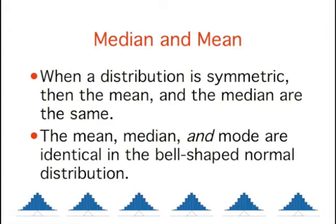There are two important final points to note when thinking about means and medians. When a distribution is symmetric, then the mean and the median are the same. Moreover, the mean, median, and mode are identical in a bell-shaped normal distribution.